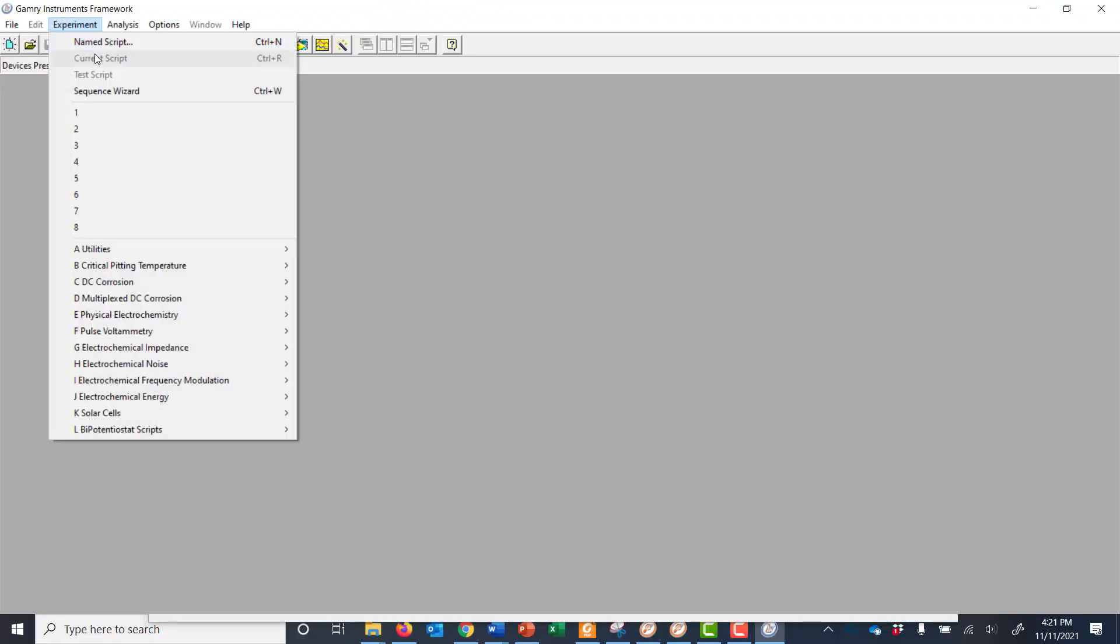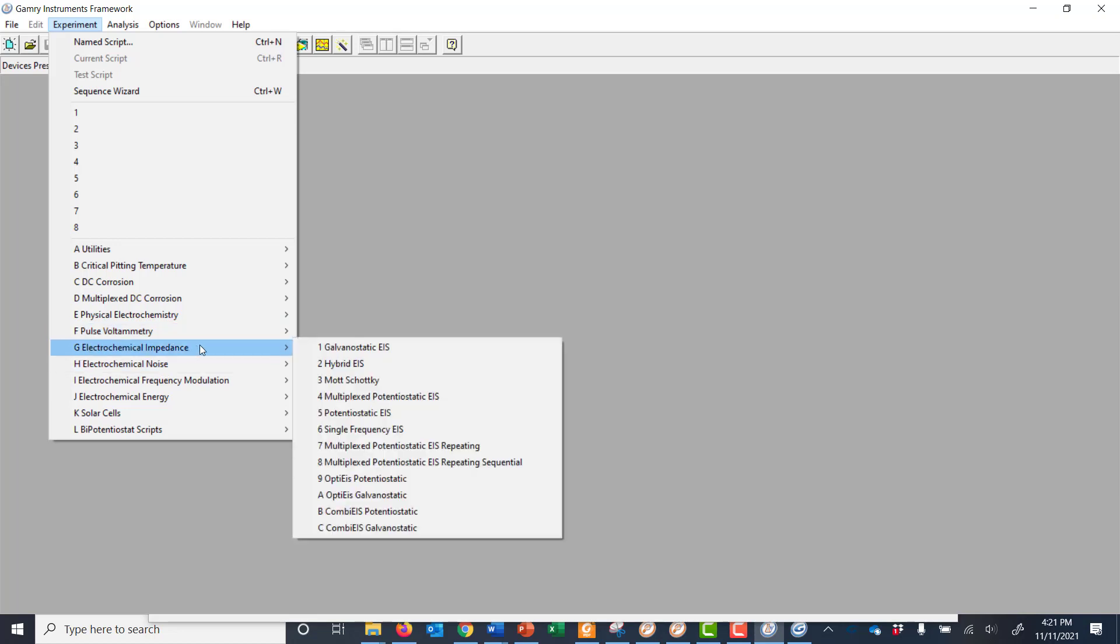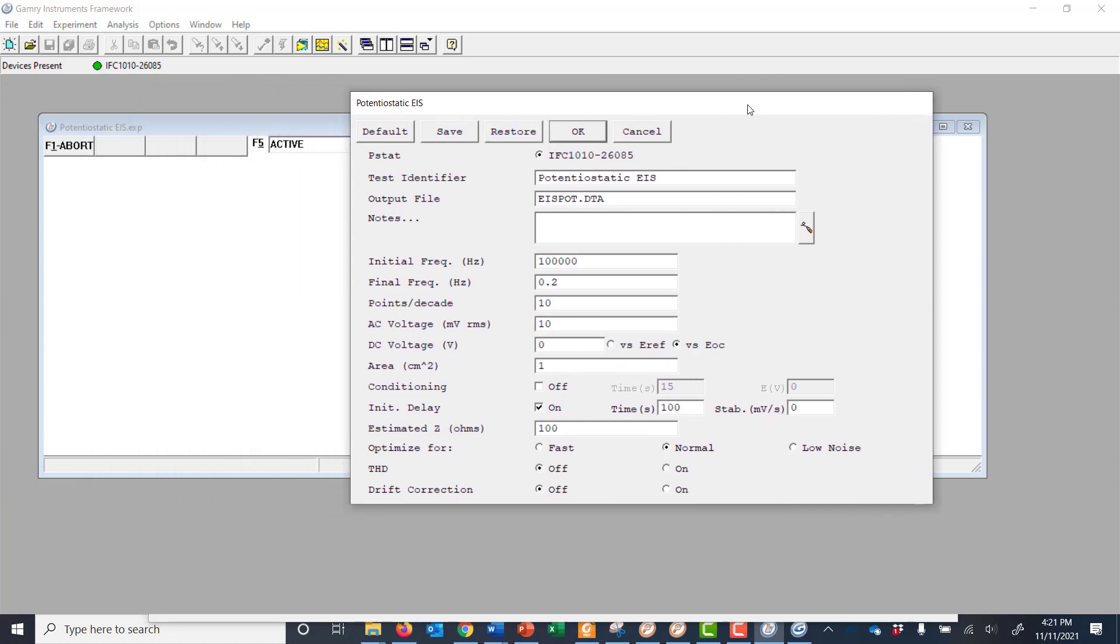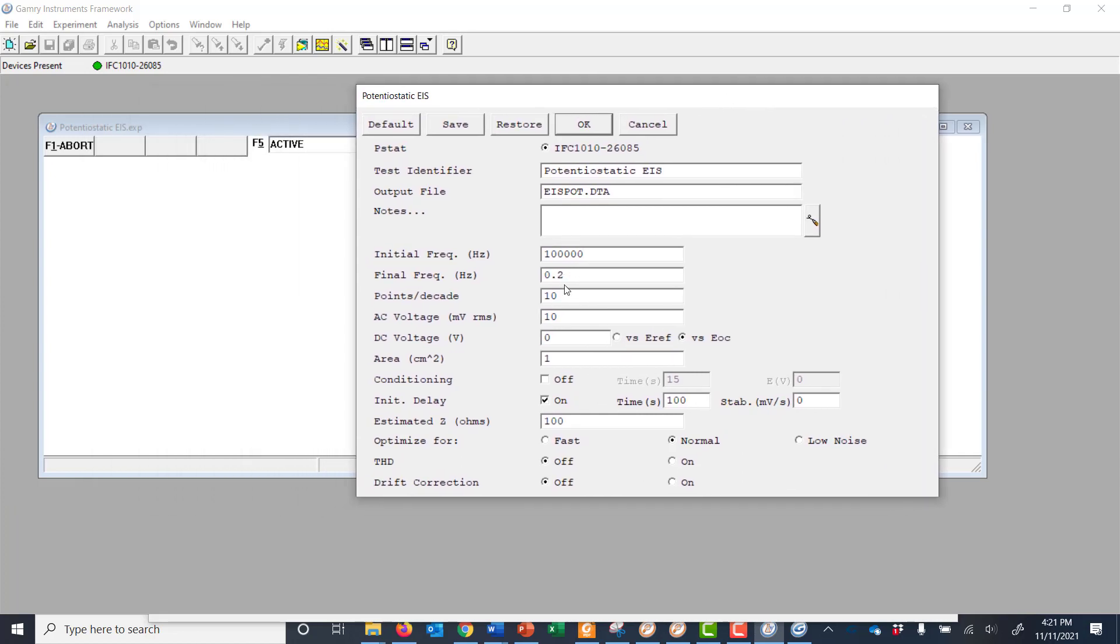And in terms of what this looks like for data acquisition, this is very simple. We would choose to run, say, potentiostatic EIS, loads up our data acquisition script, and we would input the parameters that we typically might want for our experiment. And then down here, we have the option to turn on our total harmonic distortion measurement. So this will turn on the measurement. We'll also see in another slide or two about drift correction. And so if you wanted to run drift correction at the same time, if you knew your cell voltage was going to be drifting, you can turn this on at the same time. And we click OK and run your experiment.